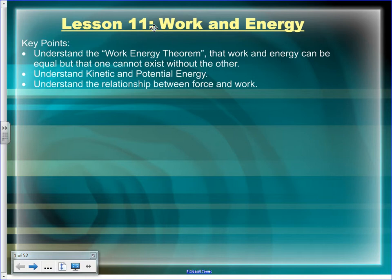We'll use the bow and arrow as an example of the work-energy theorem. There's a formula on your formula sheet: work equals force times distance. There's also a formula that says work equals delta-E — a change in energy. Those two formulas are often going to be set equal to each other when doing problem solving.